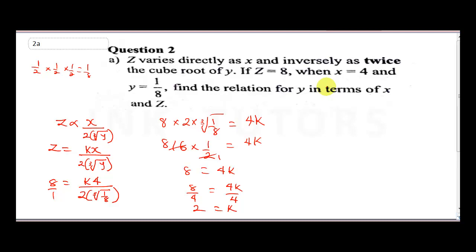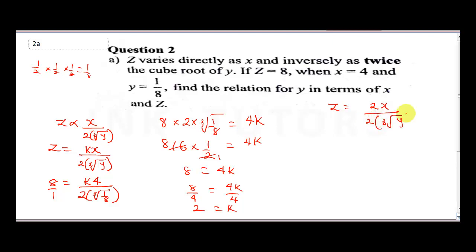Now we need to find the relation for y in terms of x and z. We go back to the initial equation and substitute k = 2: z = 2x / (2 · ∛y). The 2s cancel, leaving z = x / ∛y.